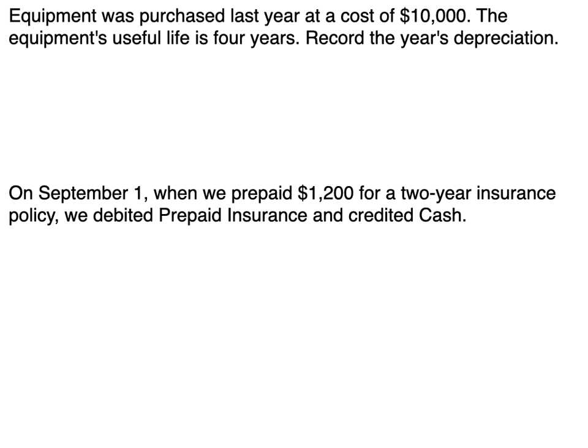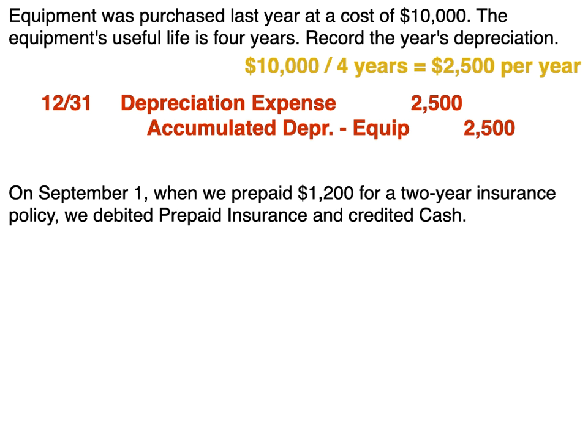Equipment was purchased last year at a cost of $10,000, with a useful life of four years. We need to record the year's depreciation using straight-line depreciation — spreading the cost of an asset over its useful life equally. So $10,000 over four years is $2,500 per year. The entry is always the same: debit depreciation expense, credit accumulated depreciation. On December 31st we record $2,500, noting it as accumulated depreciation — equipment, so we know where to place it on the balance sheet.